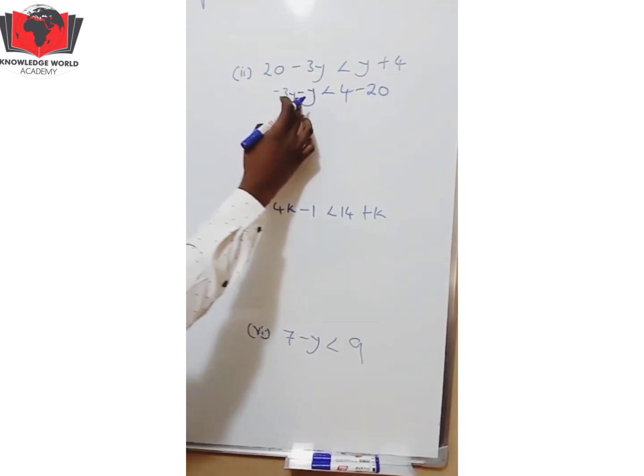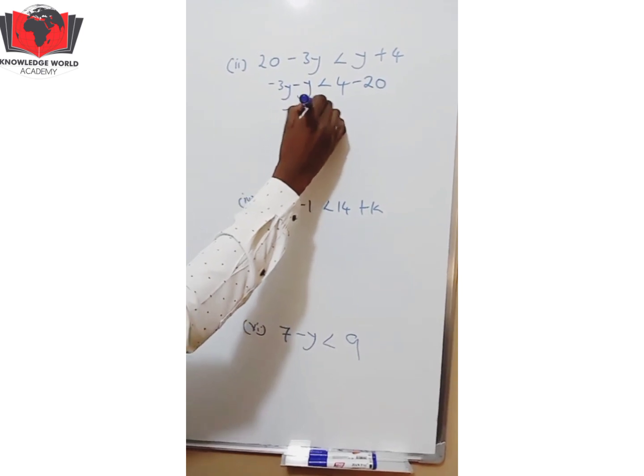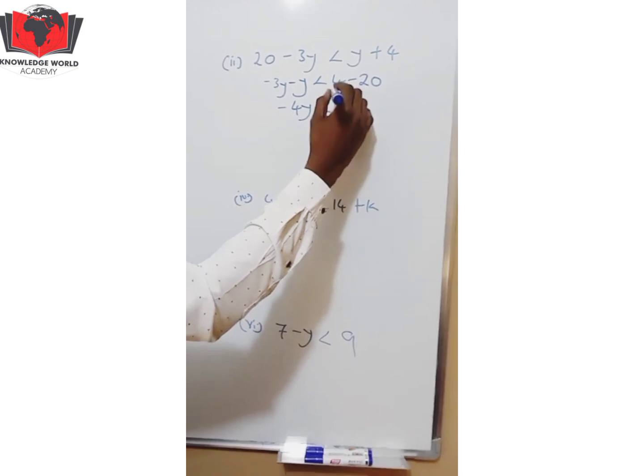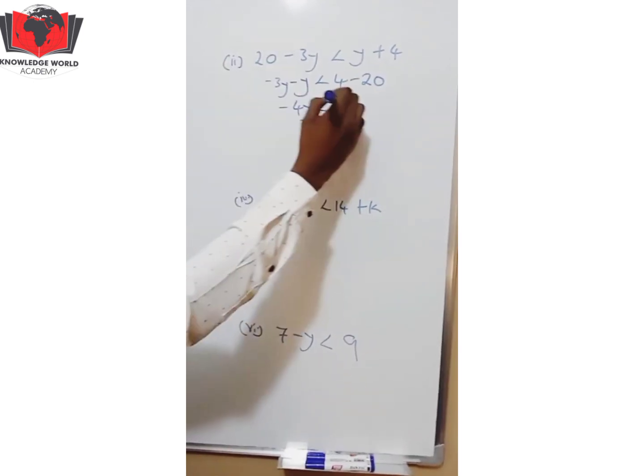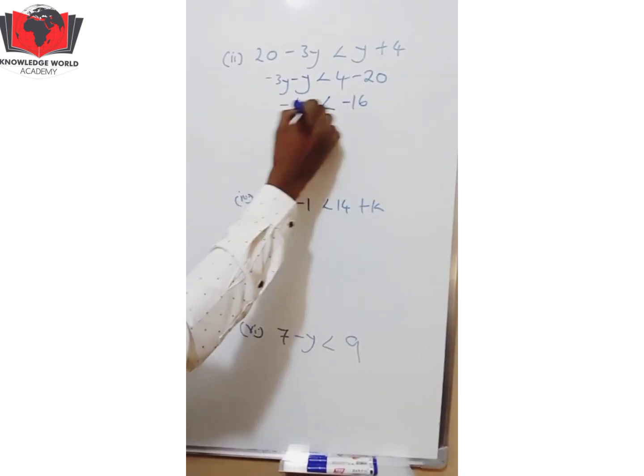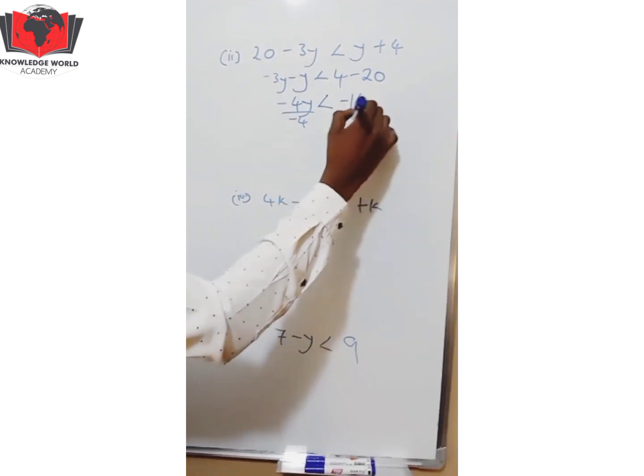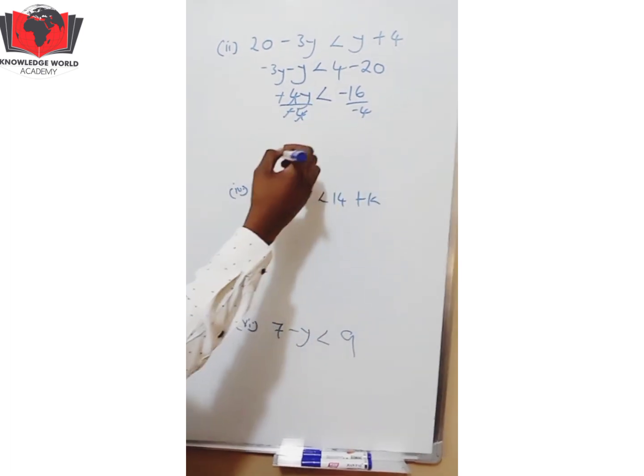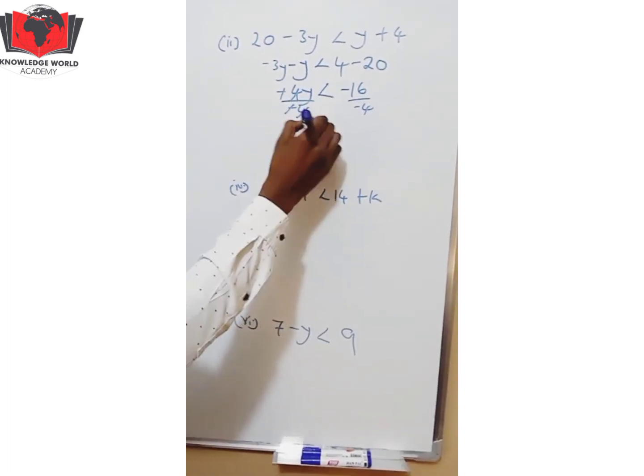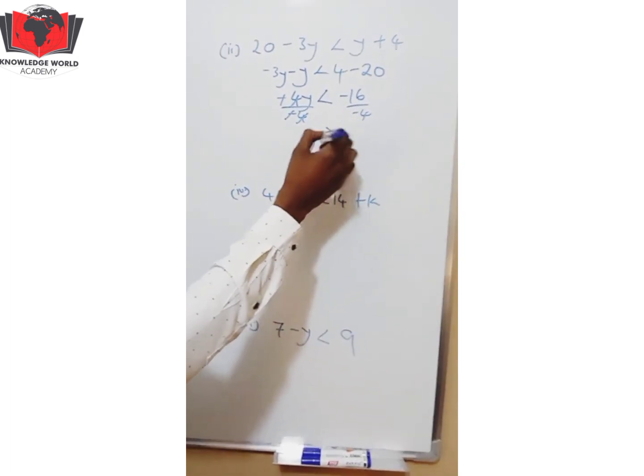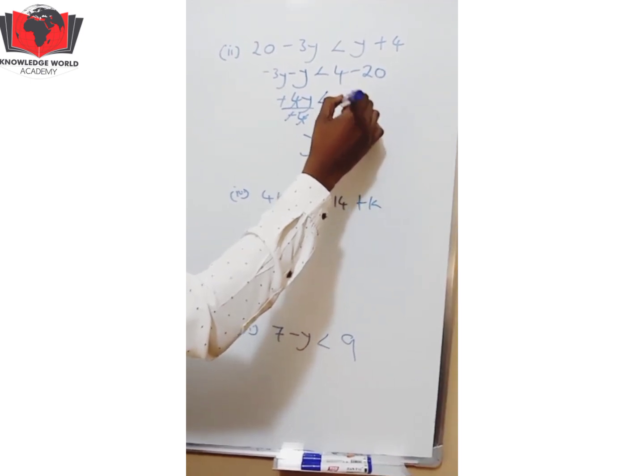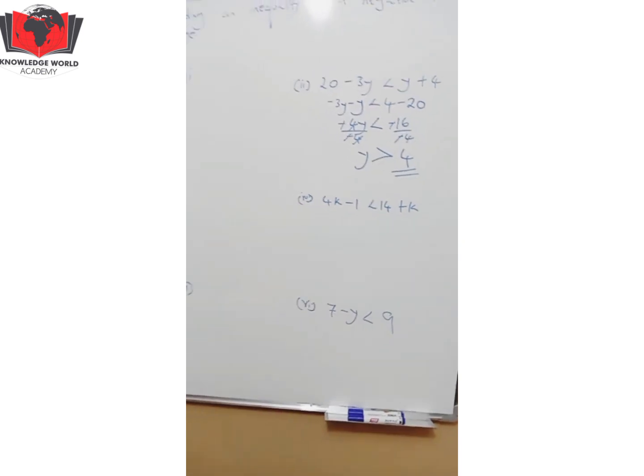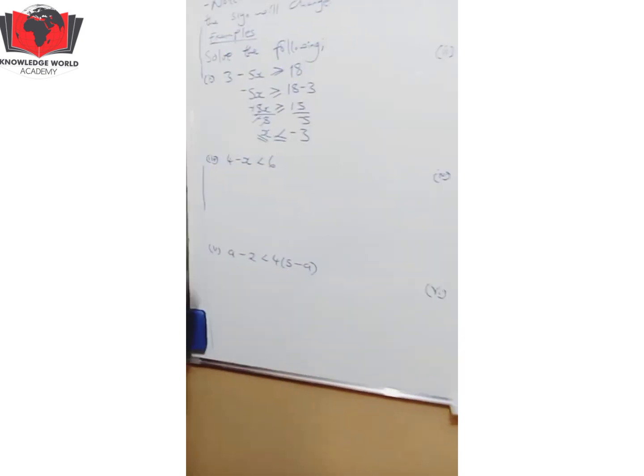-3y - y to give you -4y. By now, you know that same signs you add. Then, less. 4 - 20 is -16. Over -4, over -4. And what have I said if you are dividing by a negative? What will change? The sign. So this would be y, it would be greater than. This will cancel that. This will give you 4. Done. Once you don't change the sign, you are wrong.